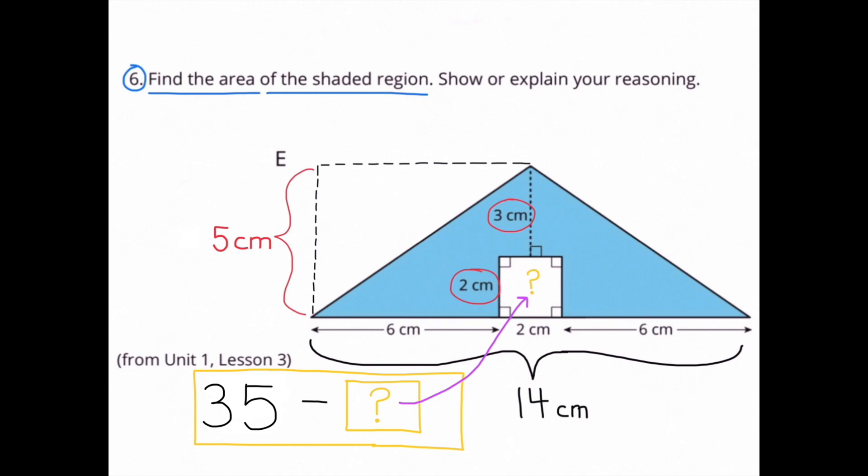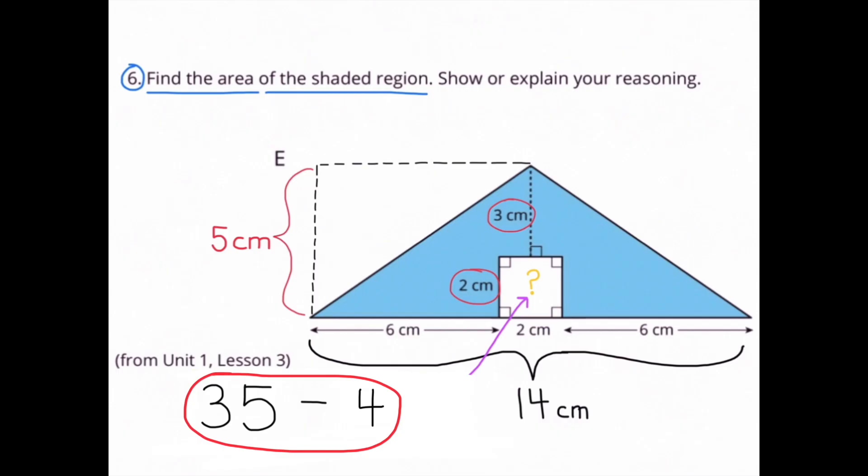Next we need to remove the square from the shaded region, and the base and the height of that square is 2 centimeters by 2 centimeters. 2 times 2 is 4. So the area of the square is 4. And 35 minus 4 is 31. The area of the shaded region is 31 square centimeters.